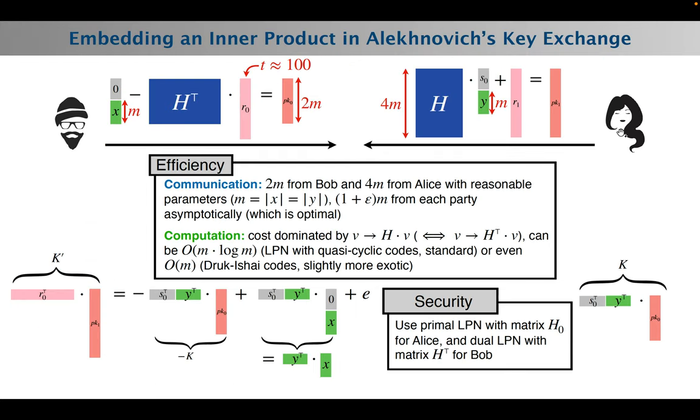So how do we do that? I'll give more details in the talk, but the key idea is that we start from Alekhnovich Key Exchange, a well-known non-interactive key exchange protocol based on the learning parity with noise assumption. We show that since computing the shared key in Alekhnovich Key Exchange natively includes doing some local inner product, we can actually use this homomorphic property and embed some inner product computation inside of the Alekhnovich Key Exchange computation.